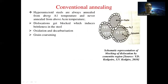In conventional annealing, hypo-eutectoid steels are always annealed from above A1 temperature and never annealed from above the Acm temperature. Dislocation gets blocked, which induces brittleness; oxidation, decarburization, and grain coarsening also occur. The diagram shows a schematic representation of blocking of dislocations by the cementite region, with the cementite region, pearlite, and dislocations clearly identified.